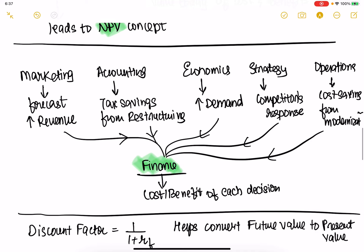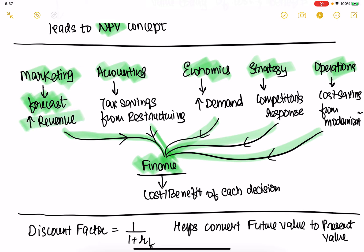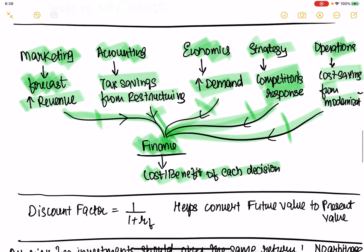Finance comes at the crux of marketing, accounting, economics, strategy, and operations decisions — they all flow into finance. Marketing may increase revenue forecasts, accounting can restructure for better tax savings, economics defines higher demand, strategy predicts competitor responses, and operations finds cost savings through modernization. Each of these decisions flows into finance, where you can do cost-benefit analysis and use NPV to decide which decision is best.